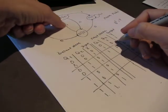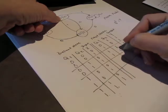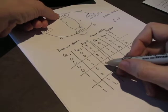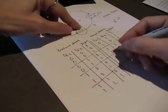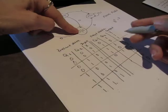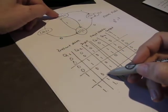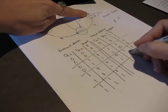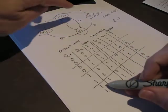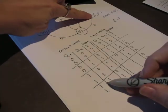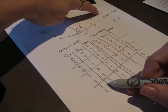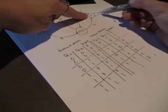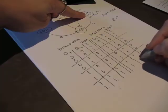At state 10 with input 0, we go to next state 01. At state 10 with input 1, we go to next state 11. At state 11 with input 0, we go to next state 11. And with input 1, we also go to next state 11.